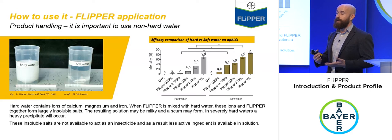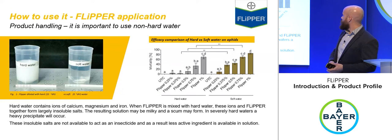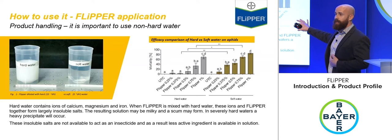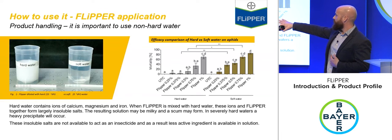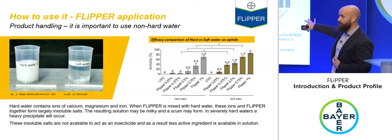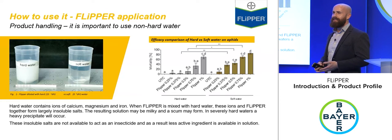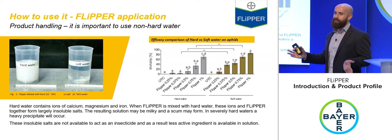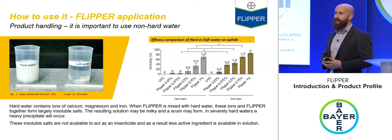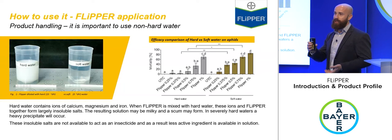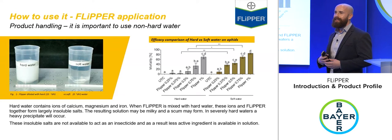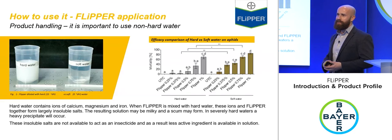Bayer's work showed that at the one percent solution, hard water hasn't had too much of an impact on efficacy, but it's still preferable to avoid it. A simple jar test — mix one percent Flipper in your water, shake, and check for cloudiness — will tell you if there's a problem. UK water is generally not as hard as in Spain or the Netherlands, so most UK growers shouldn't experience issues.